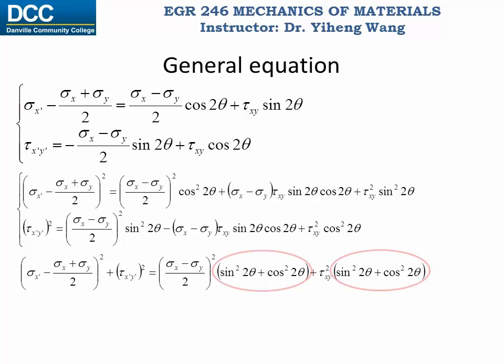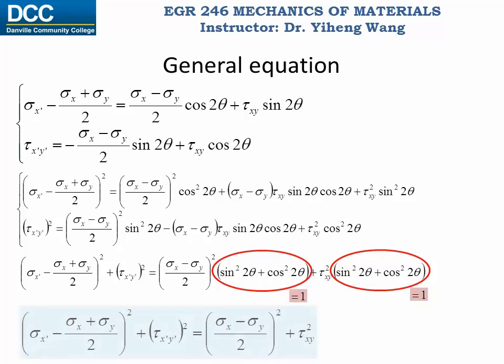For any given angle, its sine value squared plus cosine value squared always equals to one — that is the Pythagorean identity that we learned from trigonometry. Therefore this equation simplifies to this.